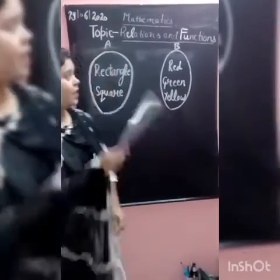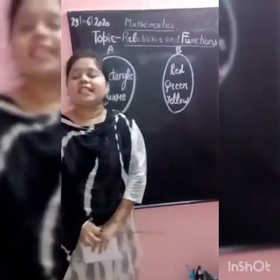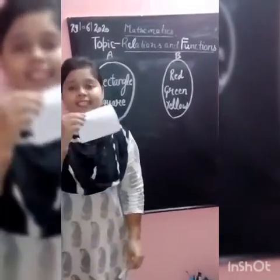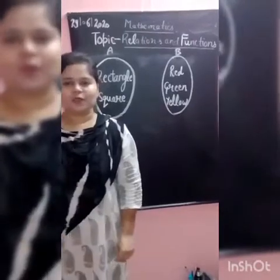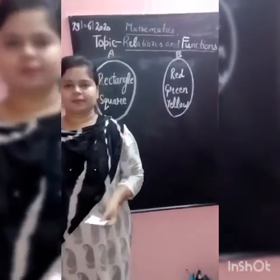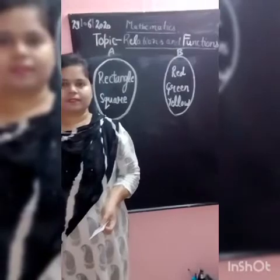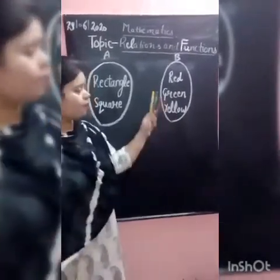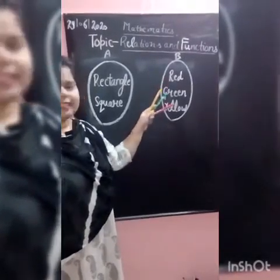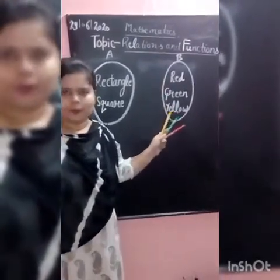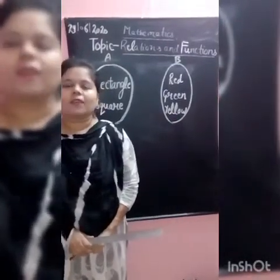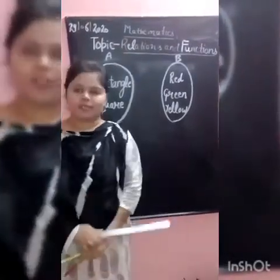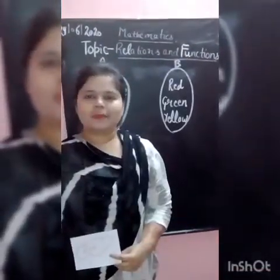Suppose we have a set A, which is a set of geometrical shapes. We have rectangle and we have square. We have another set B of colors: red, green, and yellow. So class, how many combinations can we make with the help of these objects?